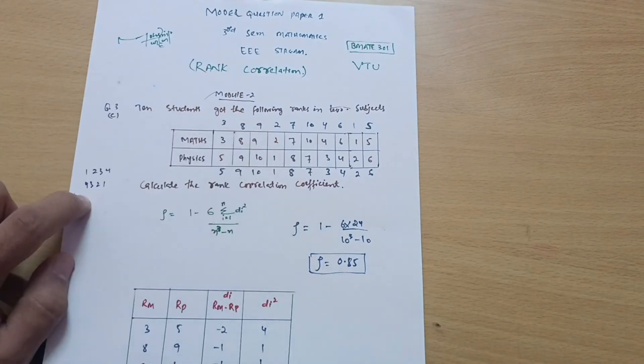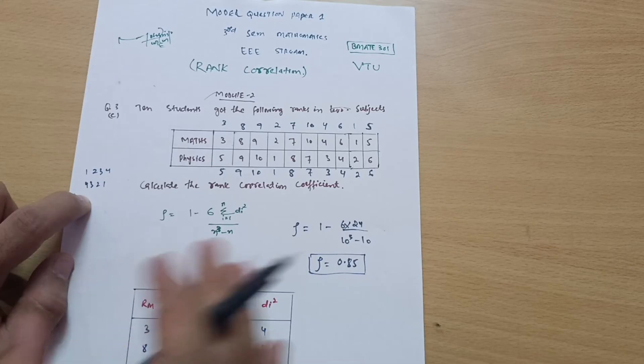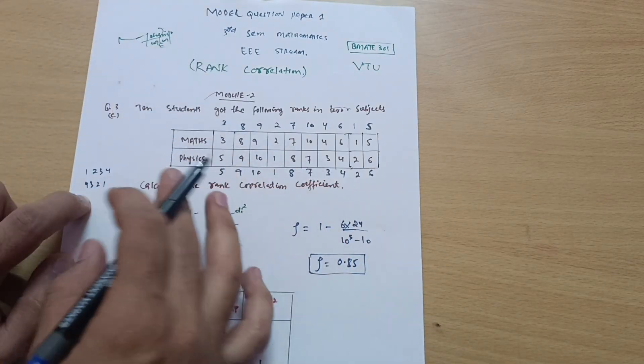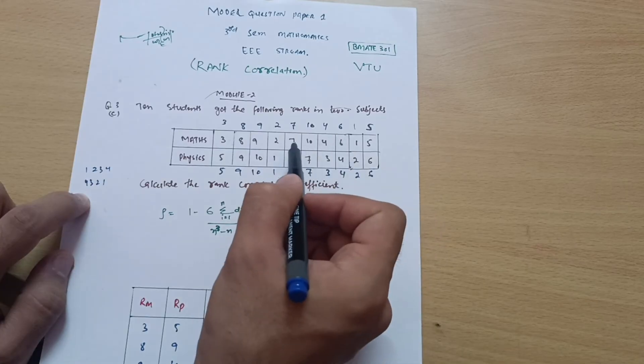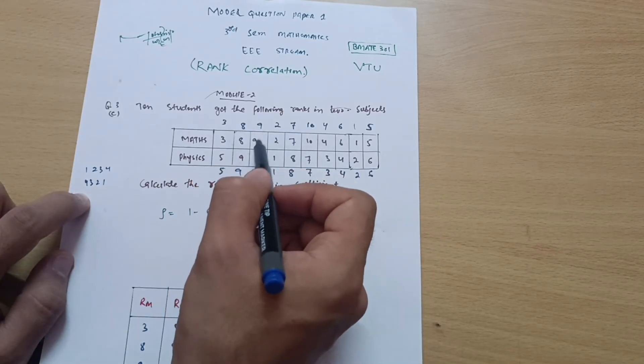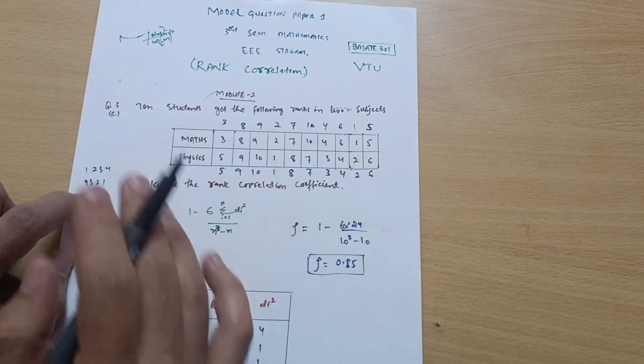For 6 you will assign the rank as 6, for 7 you will assign the rank as 7, for 8 you will assign the rank as 8, for 9 is 9, and for 10 is 10. This is the rank.